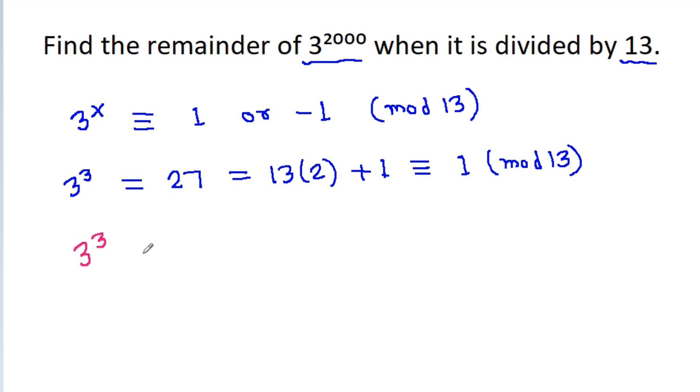We get 3 power 3 is equivalent to 1 mod 13. And if A is equivalent to B mod C, then A power N is equivalent to B power N mod C.